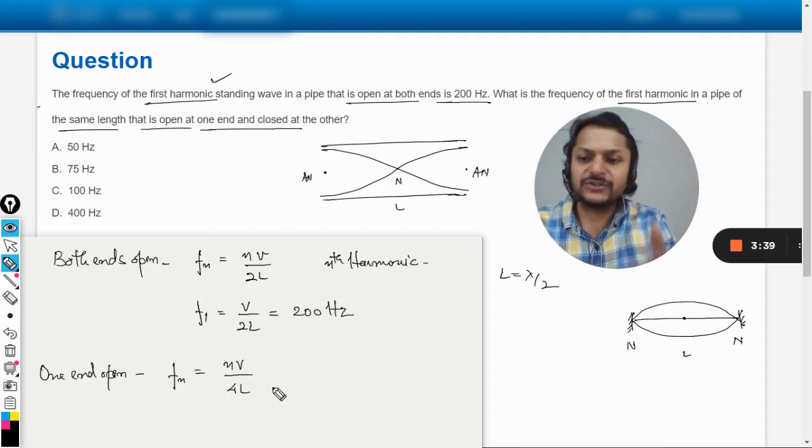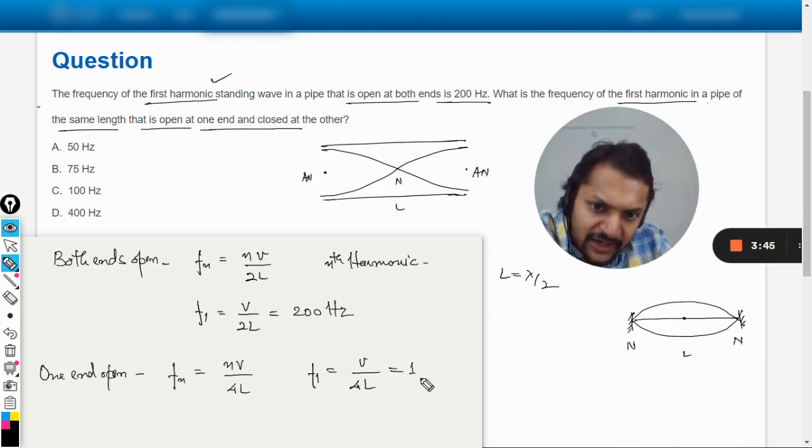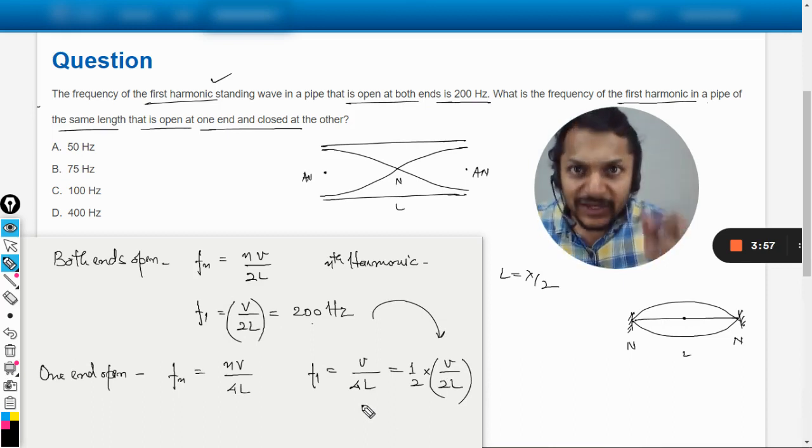And so now we are just going to substitute the values here. In this case the first harmonic frequency will be given by V divided by 4L, which can be written as half into V divided by 2L. So V divided by 2L is 200, I'm just going to substitute the same values here.